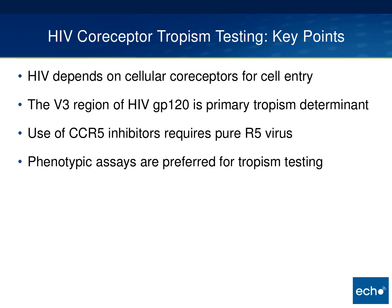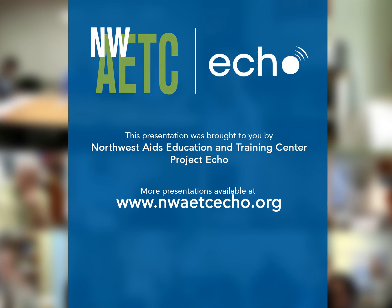In summary, four major key points: First, HIV depends on co-receptors to enter cells. Second, it's the V3 region of the HIV outermost envelope — the GP120 segment — that is the primary tropism determinant. Third, use of CCR5 inhibitors clinically requires identifying that the patient has pure R5 virus circulating. Fourth, if performing tropism assays, phenotypic assays are currently preferred for tropism testing.